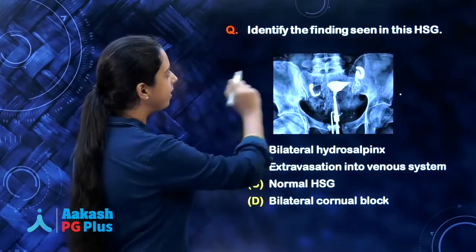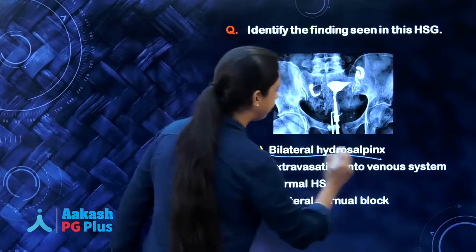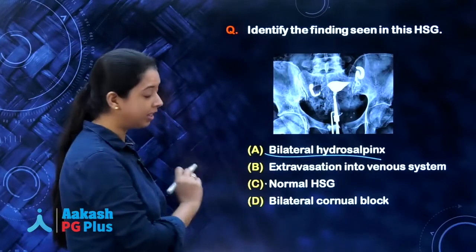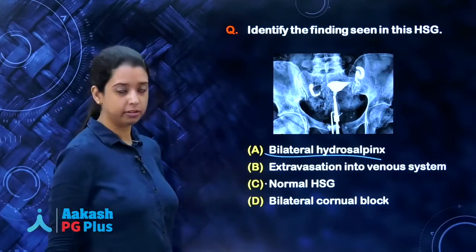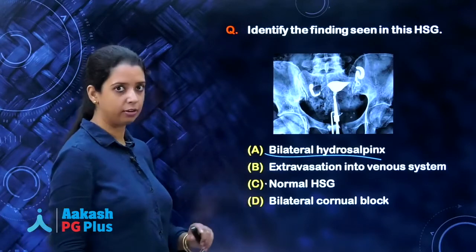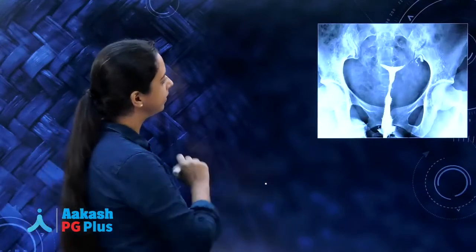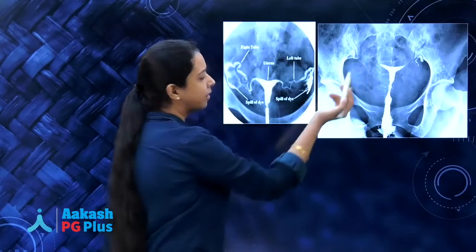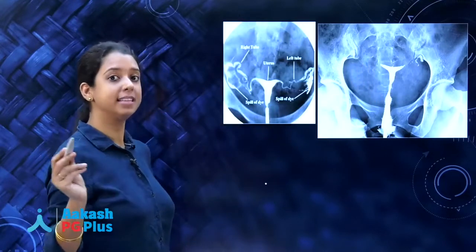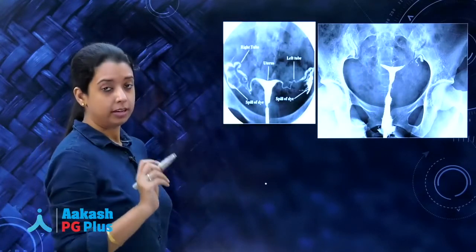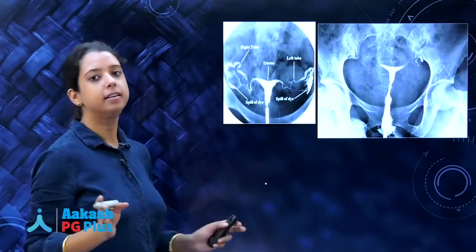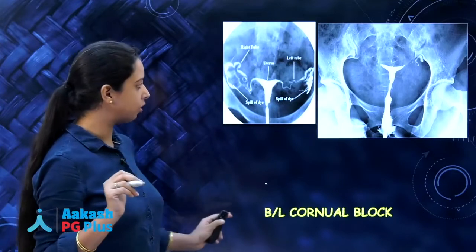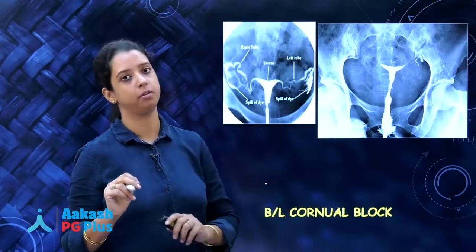So the finding is bilateral hydrosalpinx — definitely not a normal HSG. Now let us look at what the other options look like on HSG. Comparing with the normal: normal cannula, vagina, cervix, and normal uterus. But you cannot see the tubes at all — contrast has not even entered the tubes. This means the block is somewhere at the cornua. So this is a picture of bilateral cornual block.